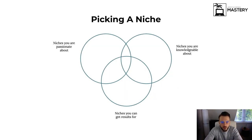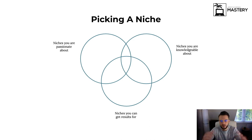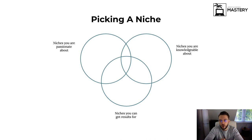In terms of picking a niche, I want you to look at a combination of three elements: niches you are passionate about, niches you are knowledgeable about, and niches you can get results for. What I recommend is literally just write this down — pen and paper, old-school. Write down five niches you're passionate about, then five niches you're knowledgeable about, and then niches you can get results for. For example, let's take my dad's company — he owns a recruitment agency, and that was actually one of my first clients.